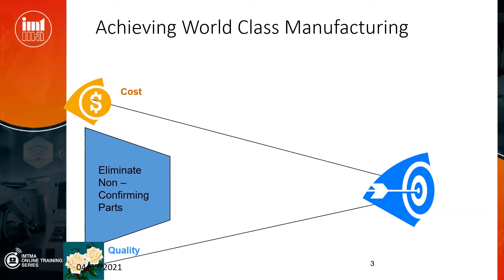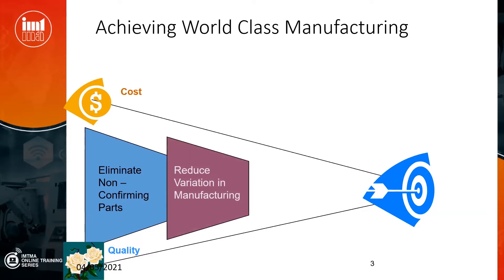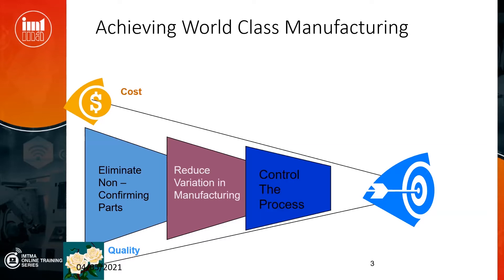So by eliminating non-conforming parts from your production, you aren't actually reducing your cost. The next step that companies would follow is to analyze why, in the same process, you have variation — why confirming parts and non-confirming parts are being produced at the same time. So to reduce the variation in the process becomes the mantra to move towards your cost and quality targets. Ultimately, this results in controlling the process, so that only conforming parts are produced and you meet your cost and quality targets.